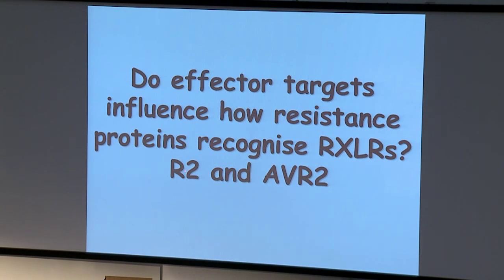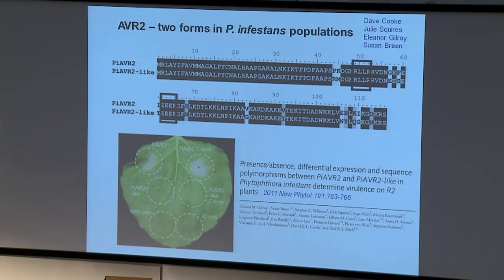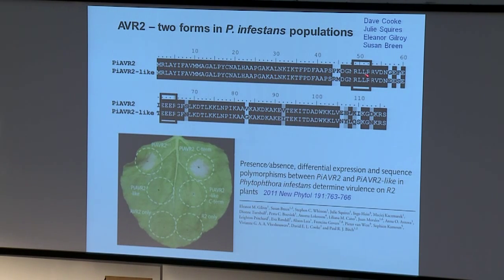I want to shift now to recognition of effectors — specifically the recognition of AVR2 by R2, the potato resistance protein R2, and whether the effector target of AVR2 plays any role in that. When AVR2 is co-expressed in the plant with R2, we get a strong cell death response. But if we look at isolates of P. infestans that are able to infect potato plants carrying R2, they have a form called AVR2-like, with 13 amino acid differences. Extensively searching the pathogen population, we don't find any other forms other than AVR2 and AVR2-like.